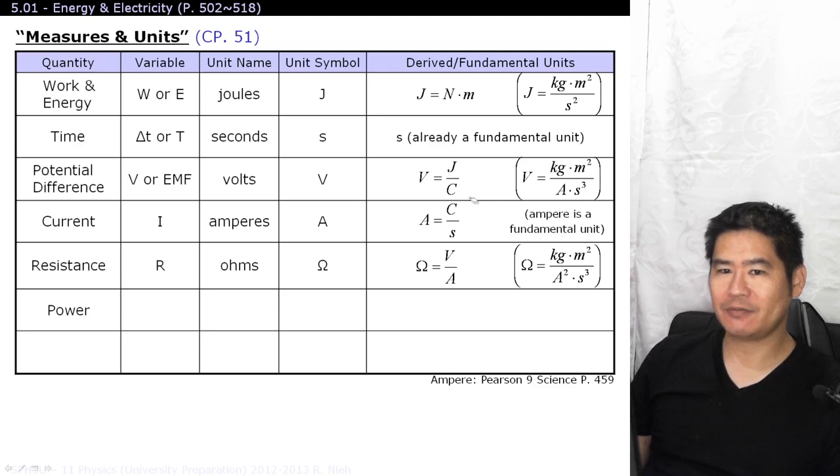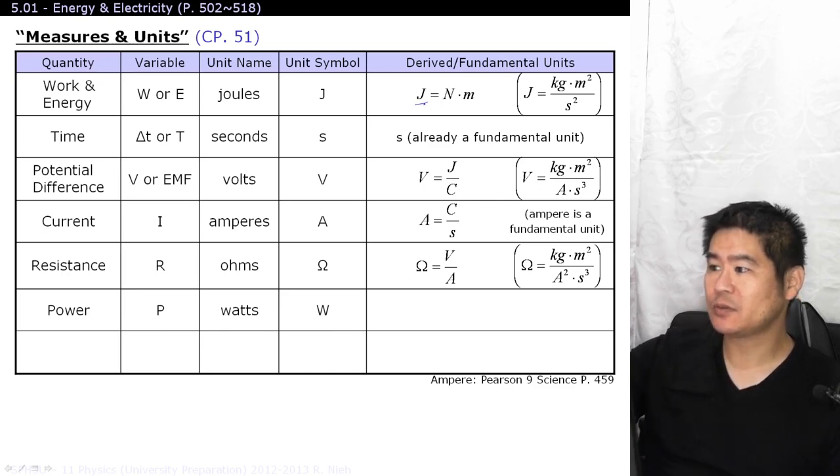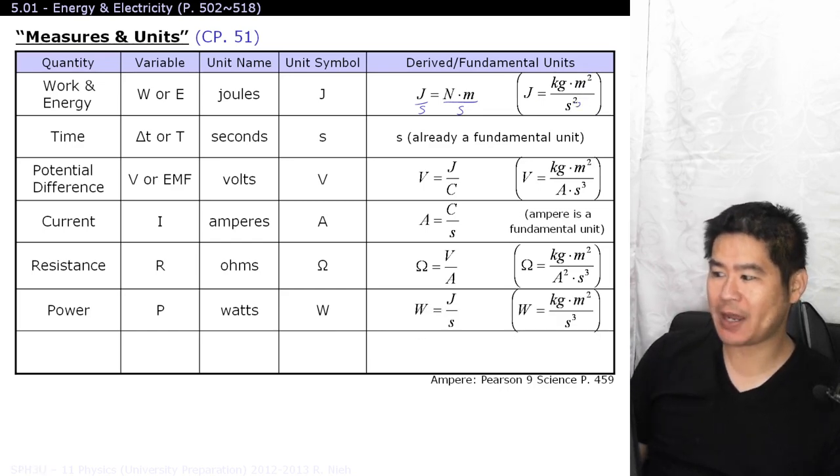Power is the rate that work is being accomplished. It can also be used in electricity as well. Power, just like in the previous unit, is measured in watts. As for the fundamental units for power, if power is equal to a joule per second, or one watt is equal to a joule per second, that's equal to one newton per meter over a second, or all of the stuff over here, per another second. So, second squared divided by another second will give you seconds cubed, and that's what it is for power.